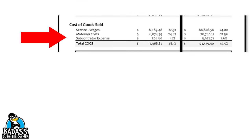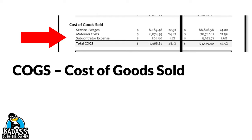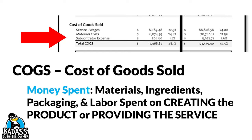The second section that you need to worry about is your cost of goods. This is one of the big ones, and this is probably where most people make their mistakes. Cost of goods is sometimes called COGS. What they're referring to is the cost of goods sold — this is all money spent on materials, ingredients, packaging, and labor that is spent on creating the product or providing the service.